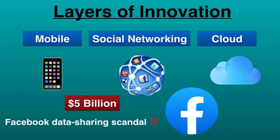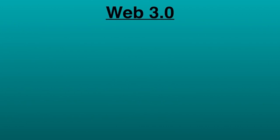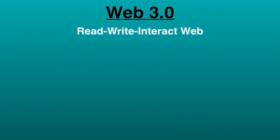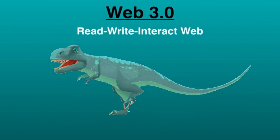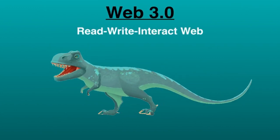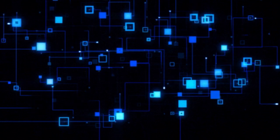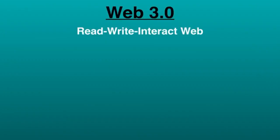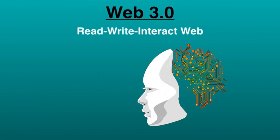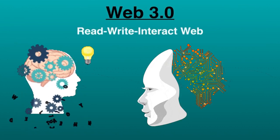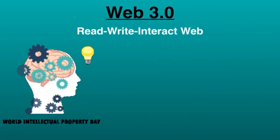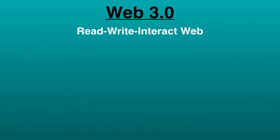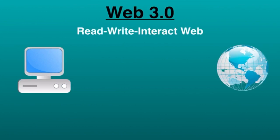Web 3.0 is a read-write-interact web where people could read, write, and interact with content including 3D graphics. Web 3.0 is the next stage of web evolution that would make the internet more intelligent with near human-like intelligence through the power of artificial intelligence systems that would run smart programs to assist users. Web 3.0 is pointing in the direction of eliminating the big middlemen on the internet such as Google, Yahoo, Facebook, Amazon, Airbnb, and eBay.